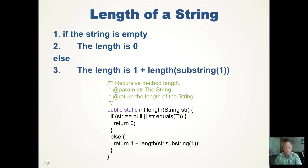Here's the Java code that implements that particular length method. It takes a string. It checks to see if the string is null or equals the empty string; if so, it returns zero. If it's not null or not equal to the empty string, you return one plus the length — you call the same method again — of the string, and you strip off the first character and supply the rest of it. Calling the length method inside of the length method is what recursion is in Java.